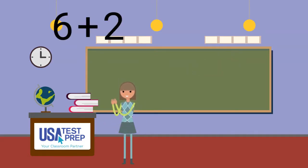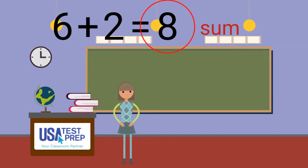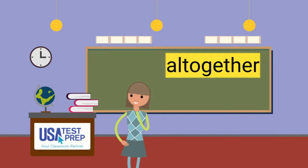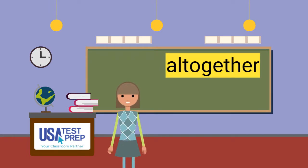We can add groups to find a sum. When finding a sum, we are finding out how many things there are all together. Can you say all together? Perfection!